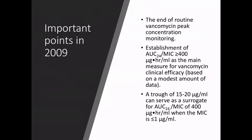One was the end of routine vancomycin peak concentration monitoring. Prior to 2009 we were monitoring peaks and troughs, and not having to measure and react to peaks was a welcome change. A second point was the establishment of the AUC 24 divided by MIC ratio of 400 or greater as the main measure for vancomycin clinical efficacy — based on a modest amount of data. And third, the suggestion that a trough of 15 to 20 micrograms per mL can serve as a reasonable surrogate for that AUC/MIC ratio, as long as the MIC for the pathogen is one microgram per mL or less.